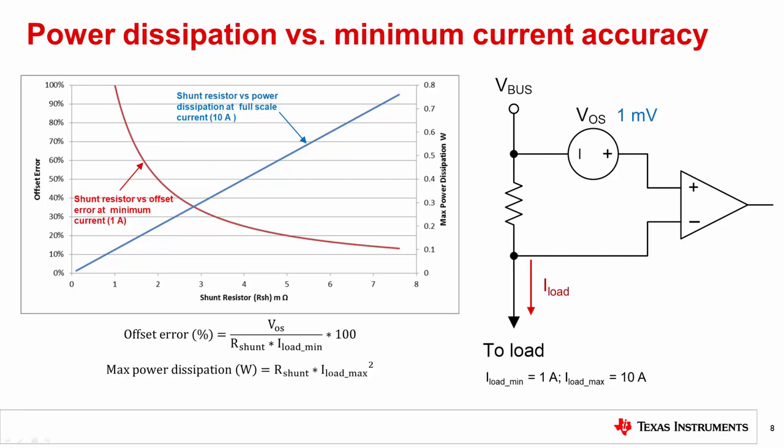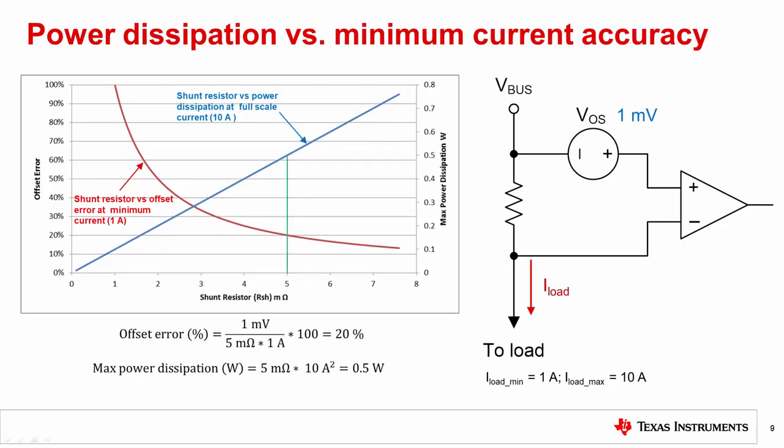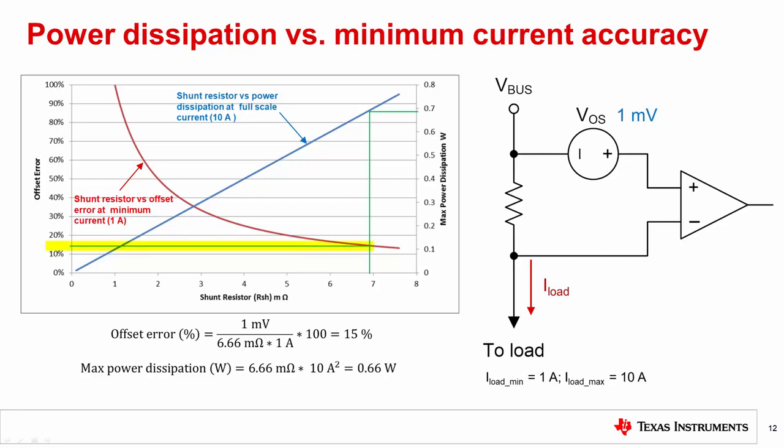If a 5 milliohm resistor is chosen for this application, the power dissipation at maximum load current of 10 amps will be about 0.5 watts and the accuracy at minimum load current of 1 amp will be 20%. If we wanted to improve the minimum current accuracy to 15%, then a shunt resistor of about 6.6 milliohms can be chosen instead.